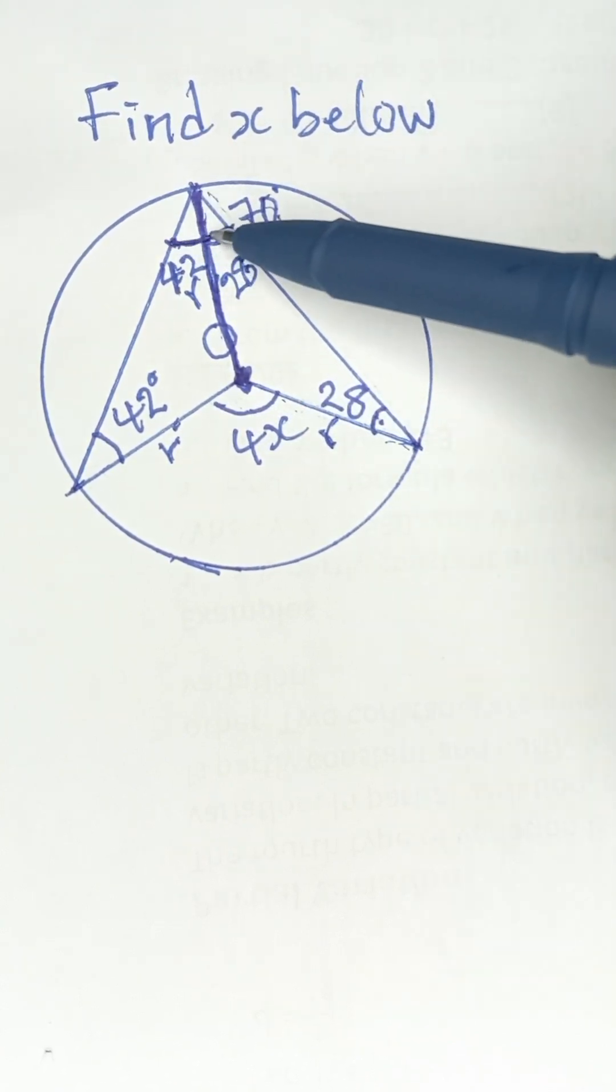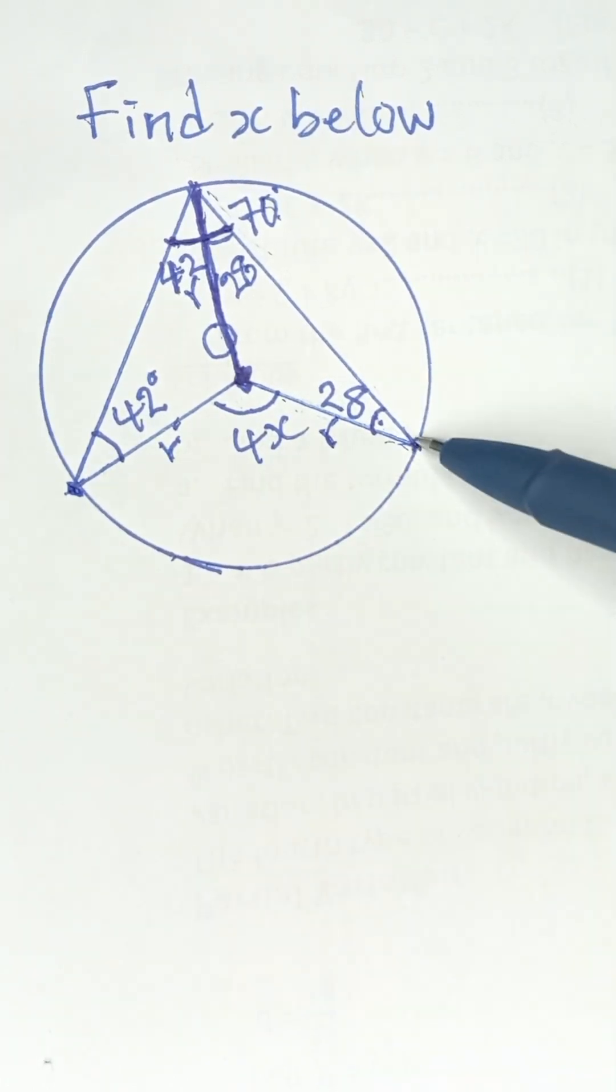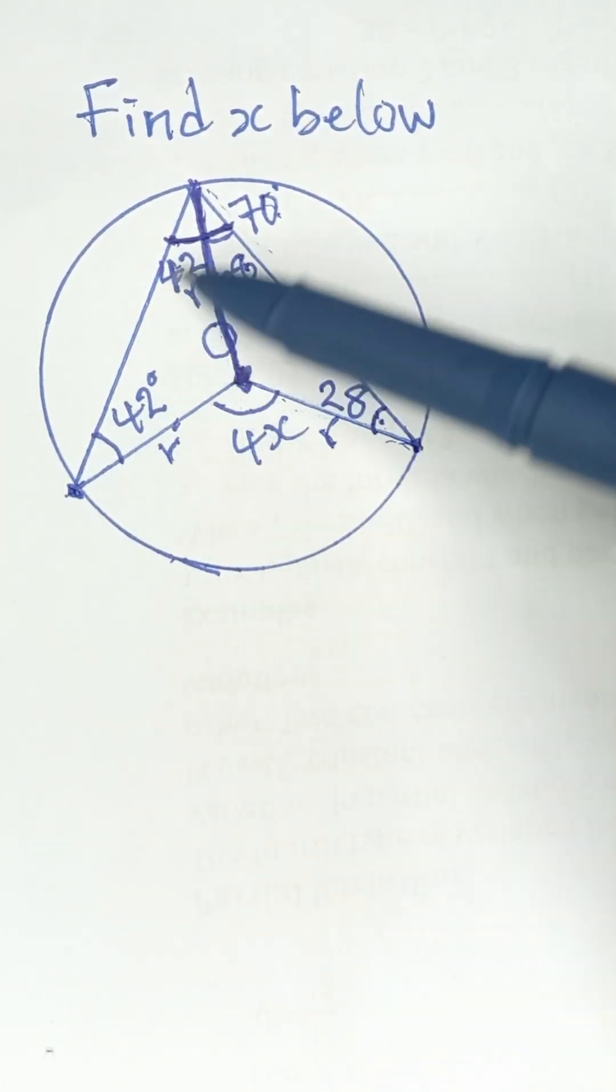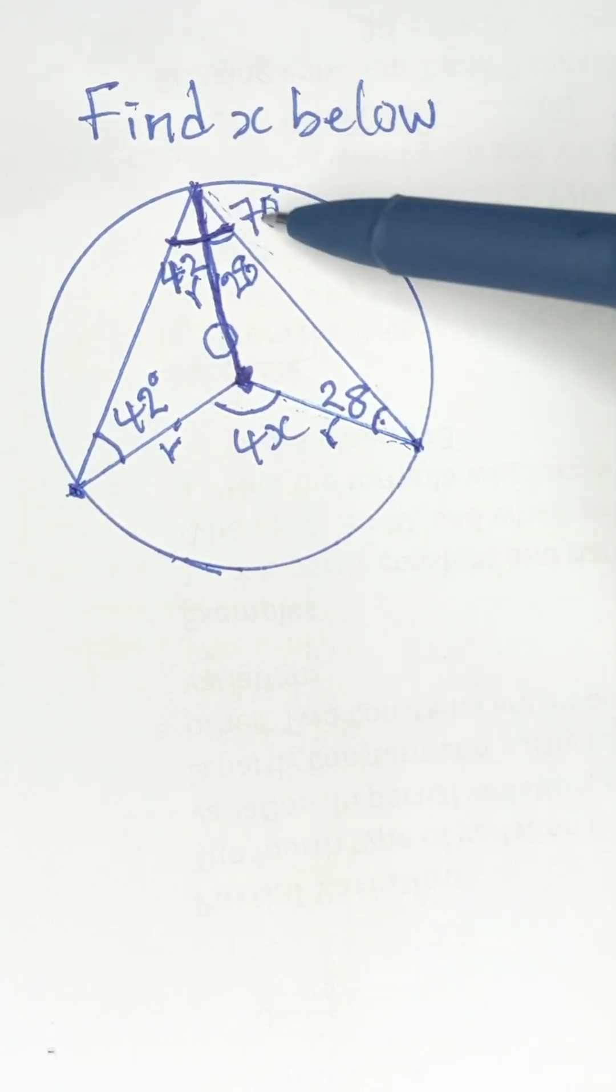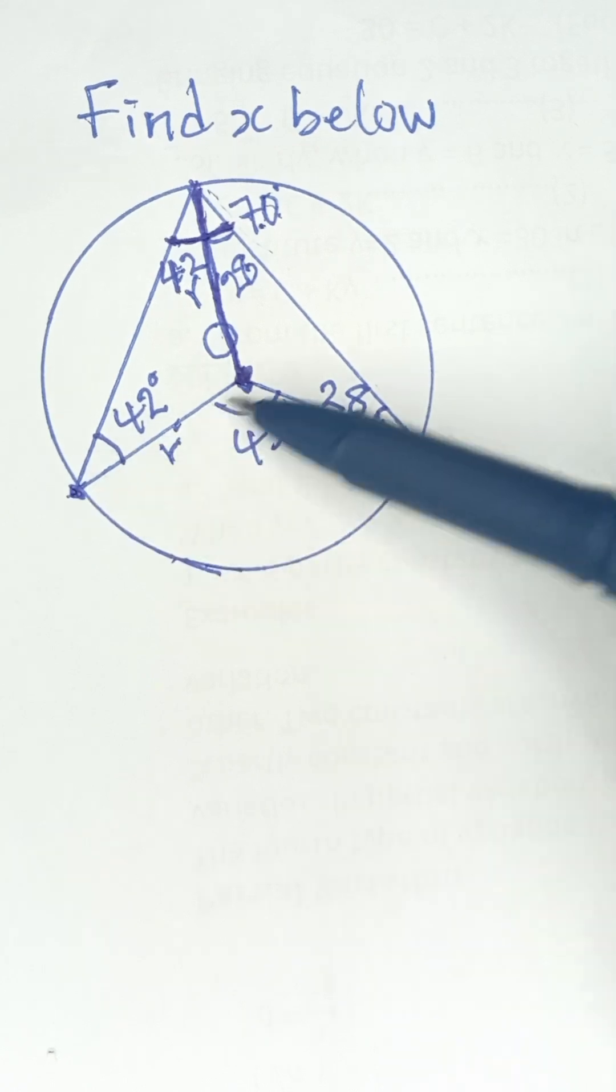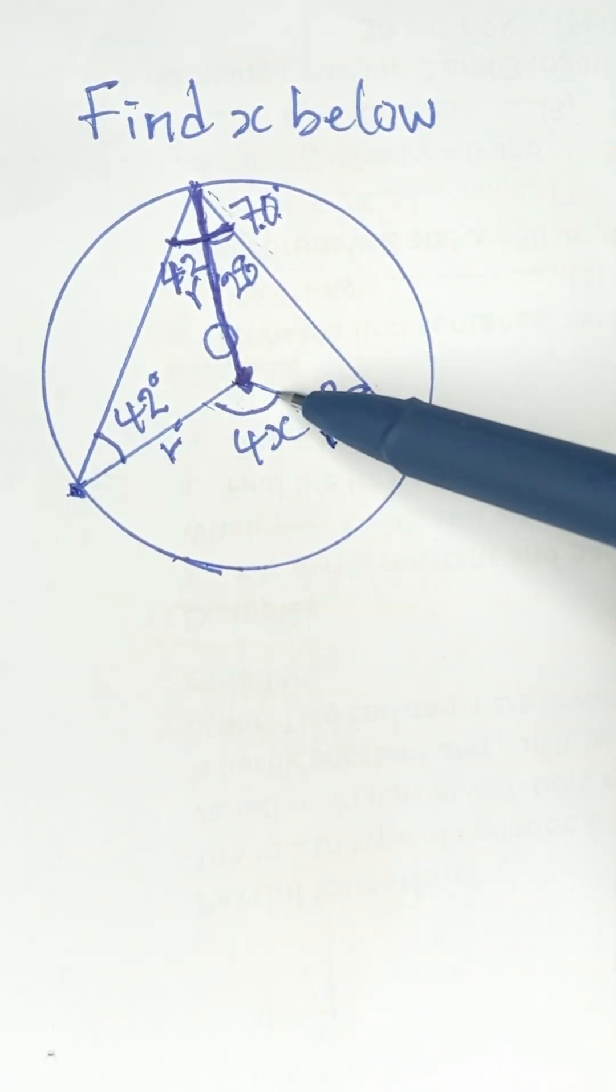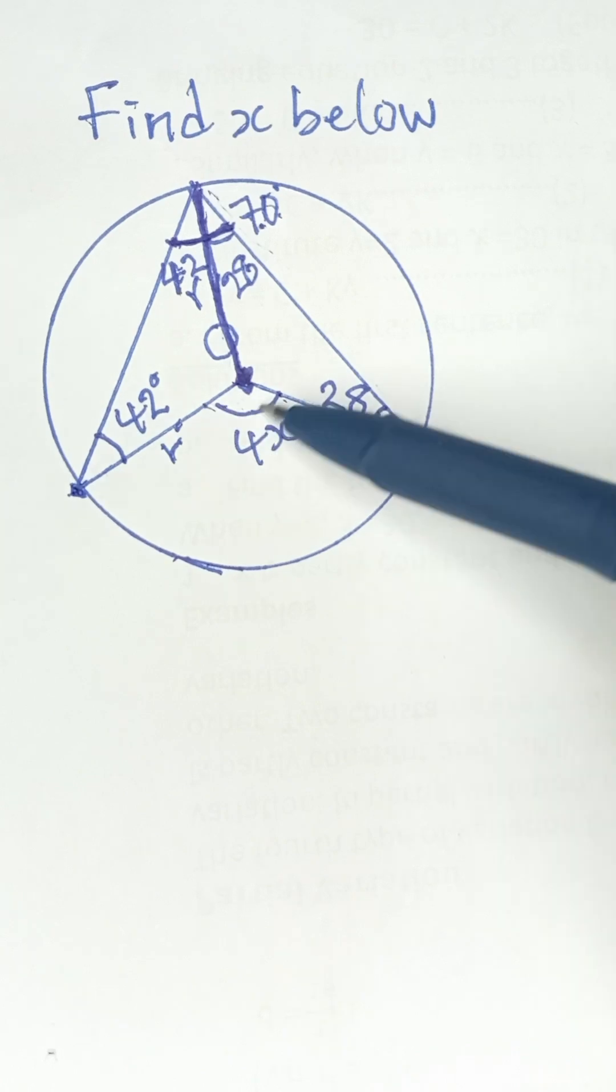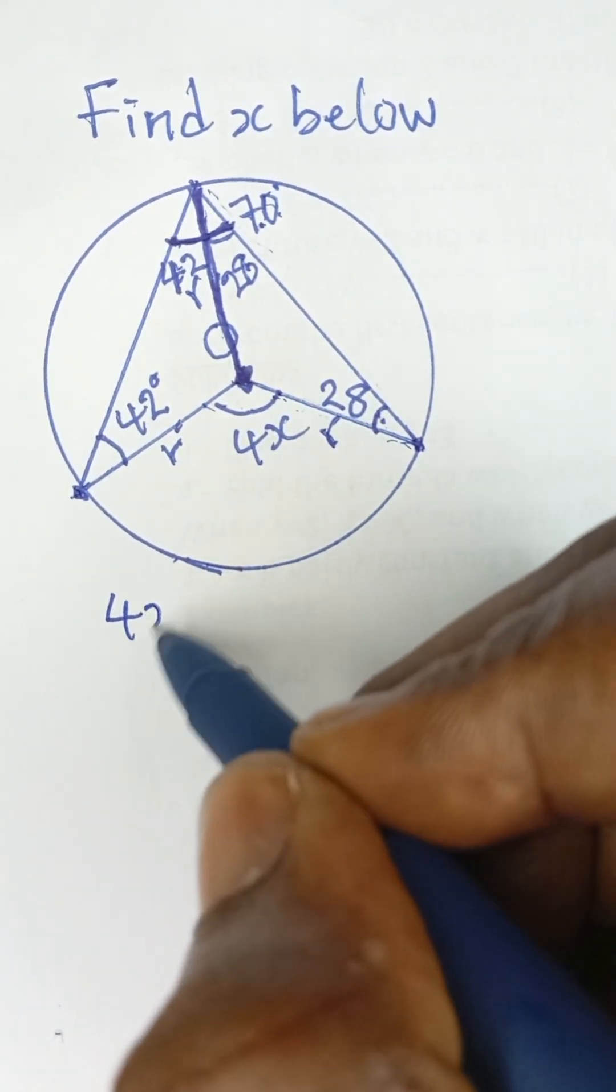Now don't forget that angle at center is twice the angle at circumference. From these two points here, this line goes to the circumference and this line goes to the circumference to make angle 70, which is what we just obtained. Then from this point to the center, this point to the center, we have angle 4x.